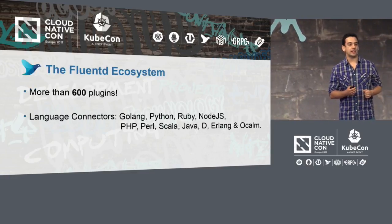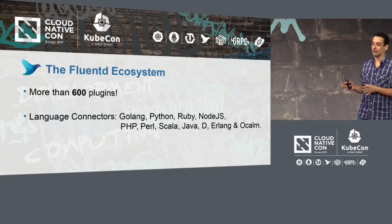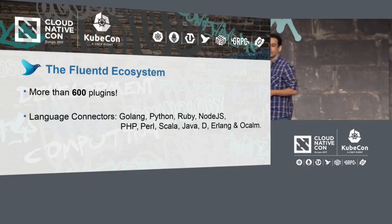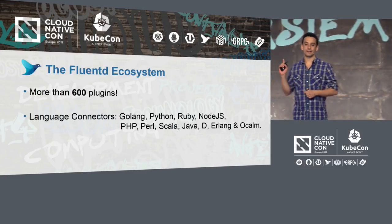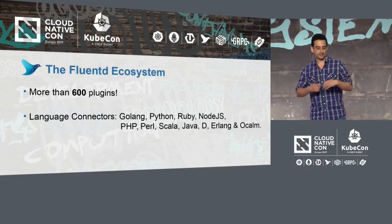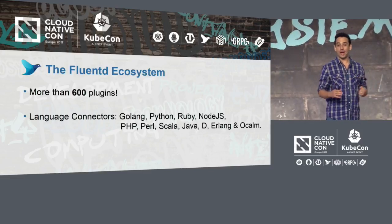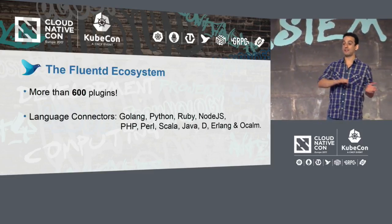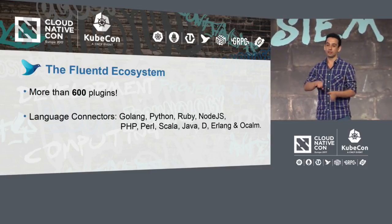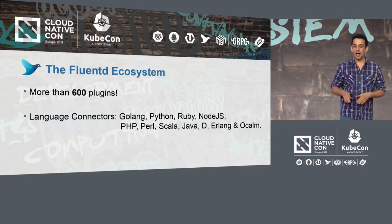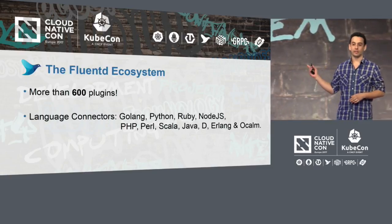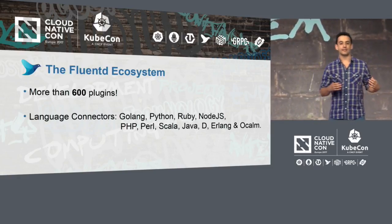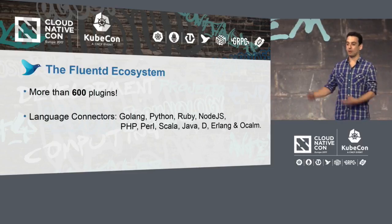FluentD is not just one service or one program — it's a full logging ecosystem. We have more than 600 plugins. Last night I did a count and there were 700-something, so about a hundred are kind of obsolete or not being maintained. Most of this work comes from the community. The main core developers of FluentD maintain maybe 20 plugins, but the rest come from the community.